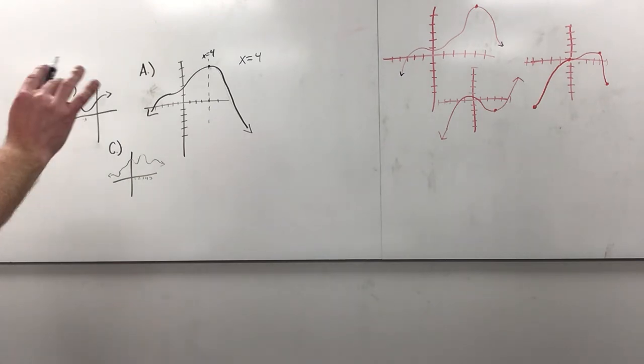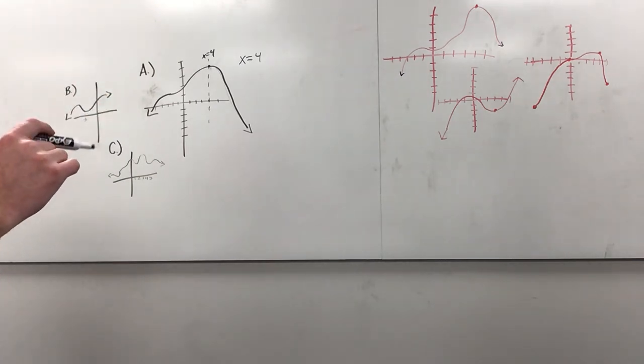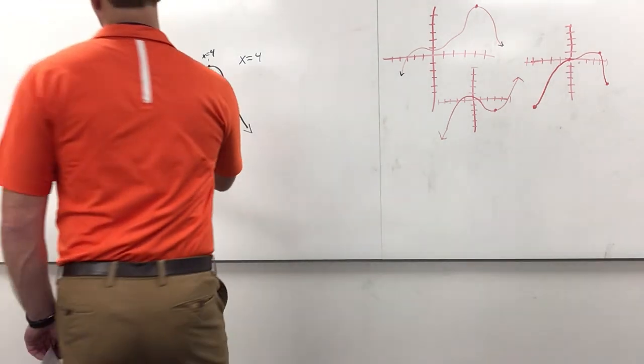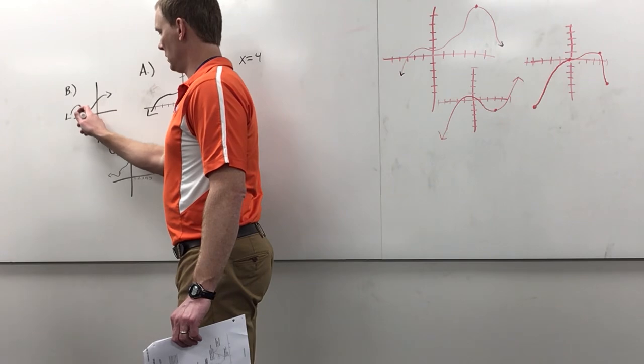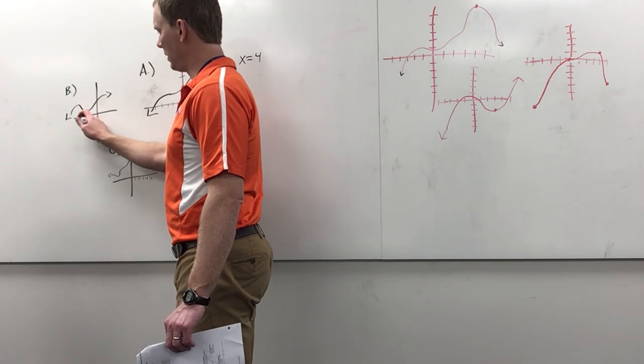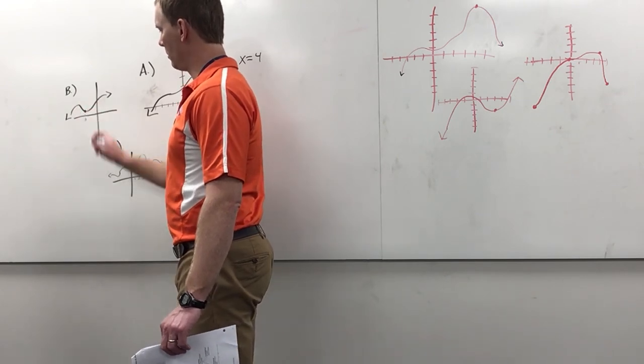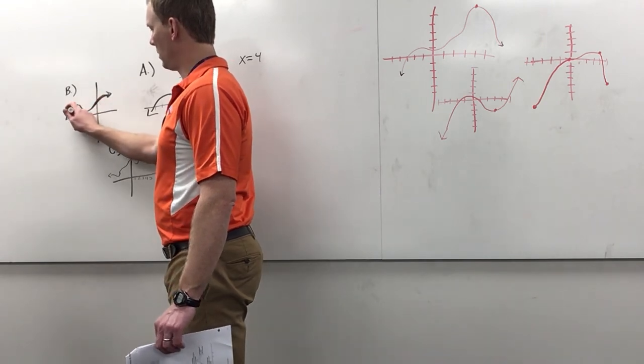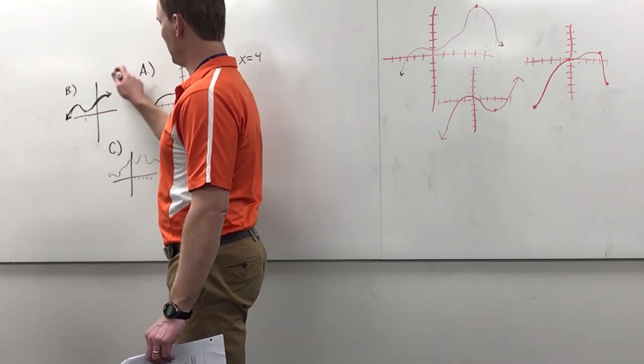Part B. Any questions on that one first? B: a local minimum at x equals negative 3, and no absolute minimum or maximum. So here's x equals negative 3. There's a local minimum because if you go right near negative 3, it's a little higher on both sides. But this is going up forever and down forever, so there's not going to be a maximum.